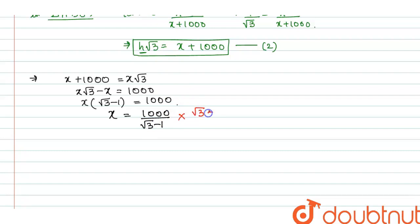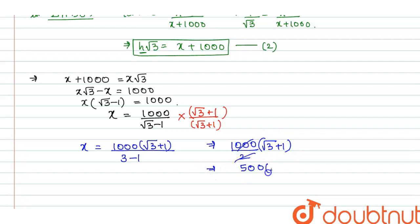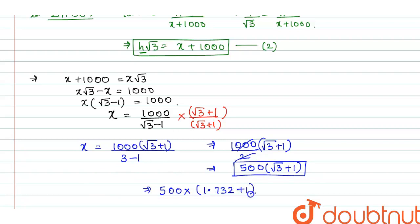To solve this I have to rationalize, so I multiply by the conjugate (root 3 plus 1) divided by (root 3 plus 1). Then x equals 1000 times (root 3 plus 1) over (root 3 squared minus 1 squared), which gives 1000 times (root 3 plus 1) over (3 minus 1) = 1000 over 2 times (root 3 plus 1) = 500(root 3 plus 1). Substituting root 3 = 1.732, this gives 500 times 2.732.